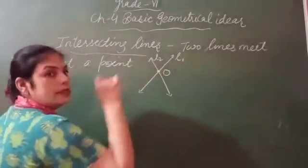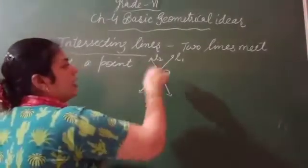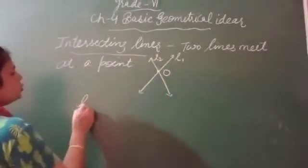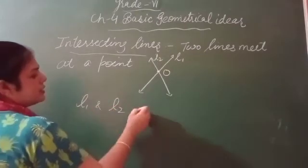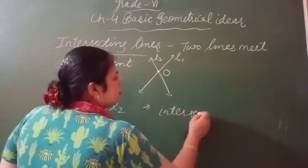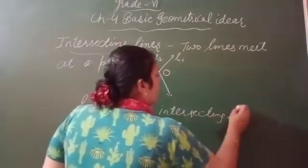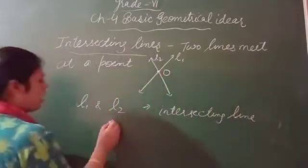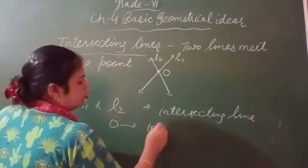The O is their intersection point, and L1 and L2 are intersecting lines. O is the point of intersection, the intersection point.